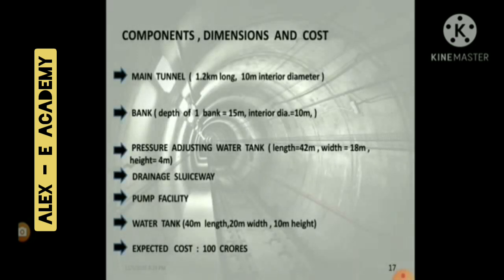Components, dimensions, and cost: the tunnel is 1.2 kilometers long with a 10-meter internal diameter. Depth of one shaft is 50 meters with a 10-meter internal diameter. The pressure adjusting water tank has length 42 m, width 80 m, height 4 m, with drainage, looseway, pump facility, and water tank. The pump facility has length 40 m, width 20 m, and height 10 m. Expected cost is 100 crores.